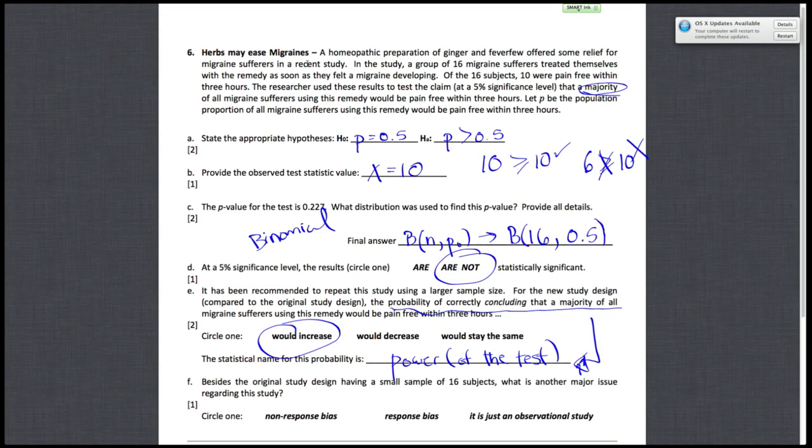All right, so F, besides the original study design having a small sample of 16 subjects, what's another major issue regarding this study? Since you're asking the subjects if they are pain-free within 3 hours after using the remedy, perhaps there's an effect where the subjects just think they are or imagine that they are due to the remedy. So the response would be biased.